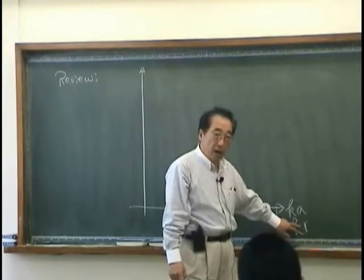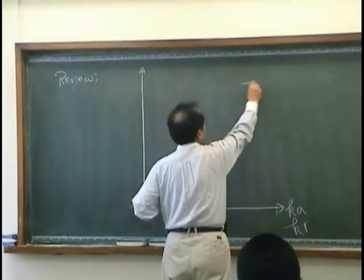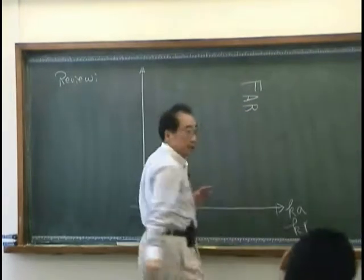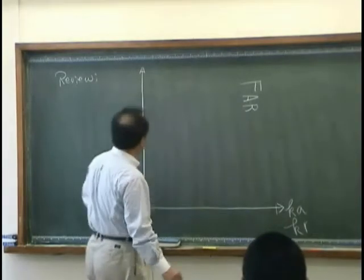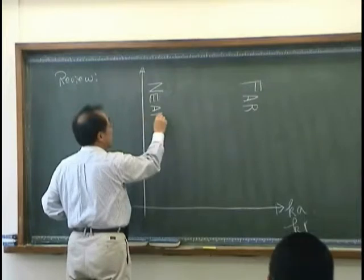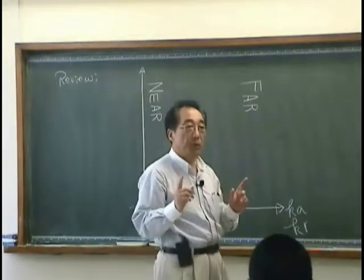So if KR is very large, for example, over here we call this the far field. When KR is very small we call this the near field. That concept is very important.